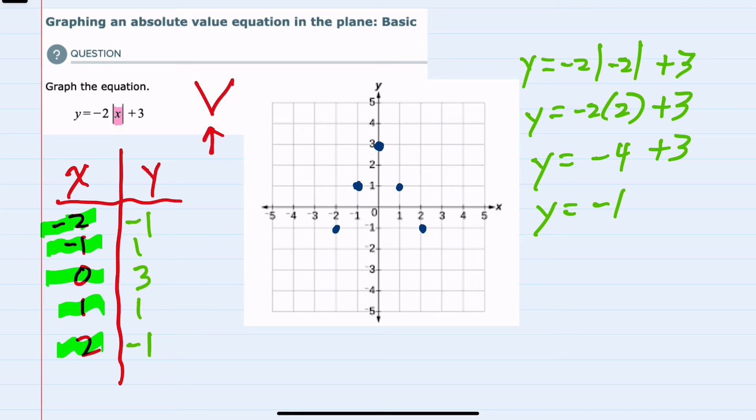We can see now with these five points that this is a V-shape, and here it is an upside-down V.